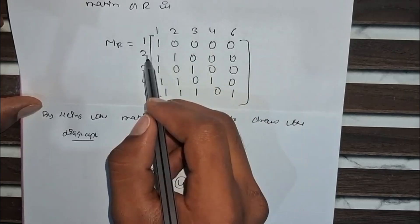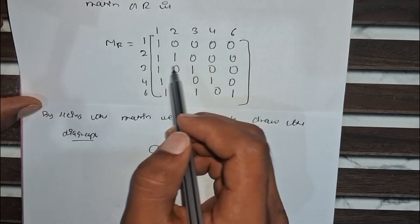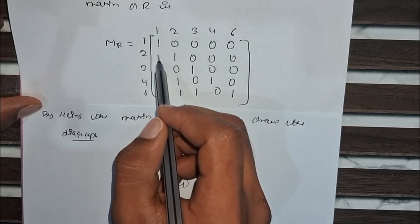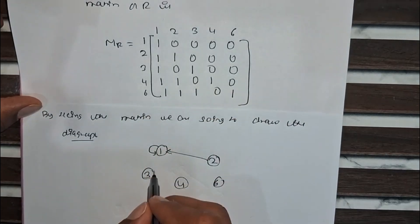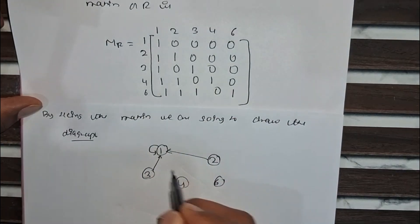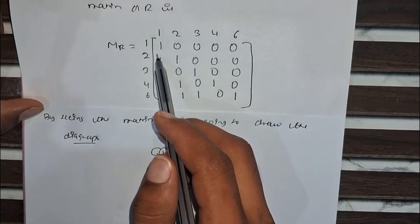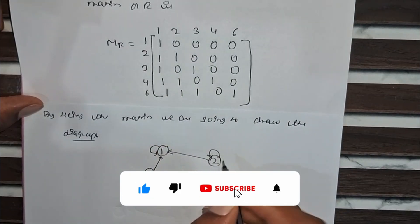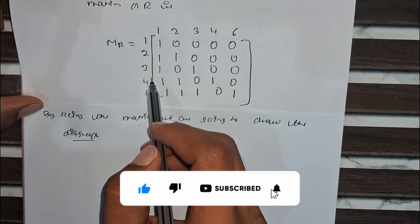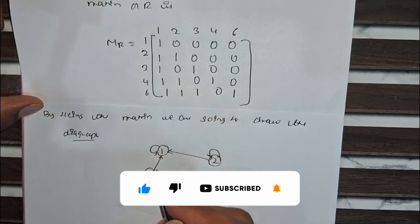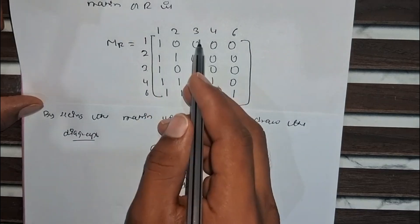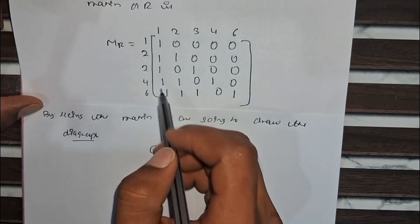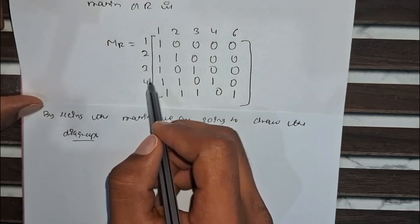Now (2,3), (2,4), and (2,6) are 0 so no arrows there. For 3: (3,1) is there so it is directed to 1. (3,2) is also there so it is directed to 2. Now for (3,3), it is directed to itself. Now go for 4.